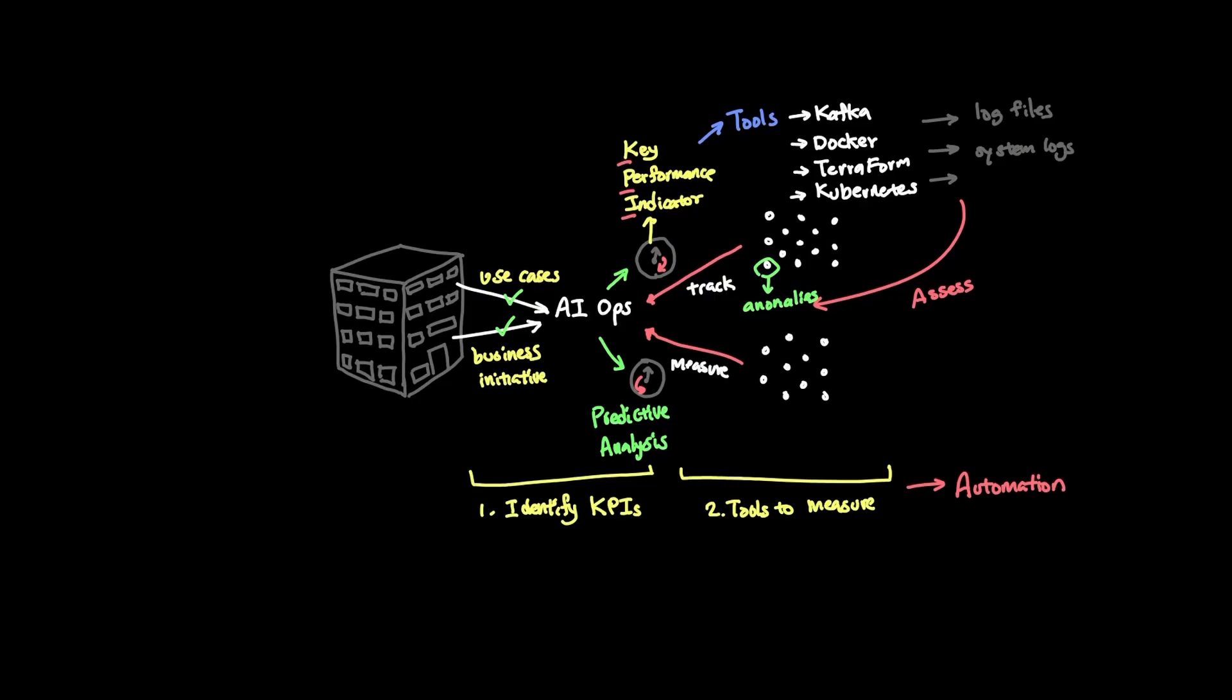But getting to automation requires understanding the baseline of what a healthy system looks like in the first place, and knowing how to measure KPIs to troubleshoot as you manage the AI systems in operation.